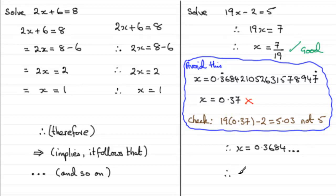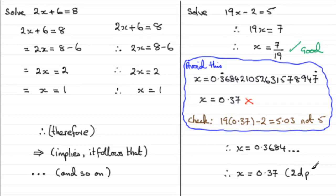Then I can say: therefore x equals — and decide on an accuracy. Suppose I decide on two decimal places, then x equals 0.37, but I don't leave it like that because I've proved that it's wrong on its own. What I need to do is say in brackets what accuracy I've used — in this case, two decimal places. I get the same answer for two significant figures as well. But at least I've given an accuracy, and I'm saying x equals 0.37 approximately, but I'm giving that approximation to two decimal places — not categorically saying it is 0.37.